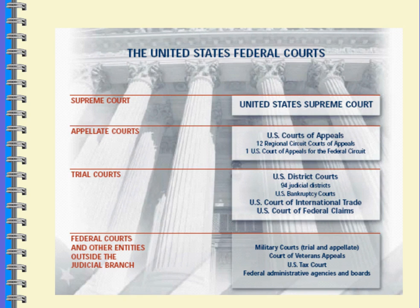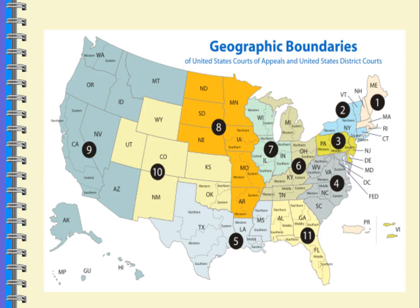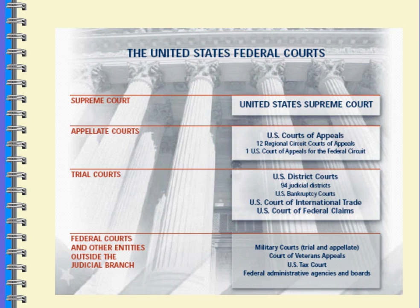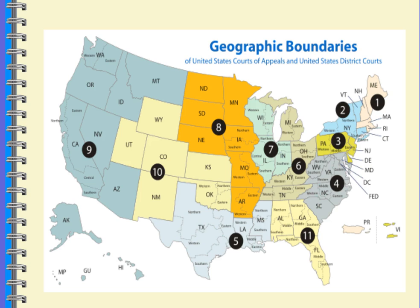Looking at how the courts line up: we've got federal lower courts outside the judicial branch — entities like military tribunals, Court of Veterans Affairs, and tax courts. Then we have trial courts — those are the 94 districts. The appellate courts are 12 regions, including the D.C. Circuit, separated by geography. Then we've got the U.S. Supreme Court, the highest court in the land. If the Supreme Court agrees to hear a case, great; if not, the lower appellate court ruling stands. Those 12 circuits hear appeals within their geographic districts.